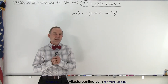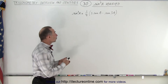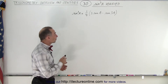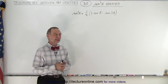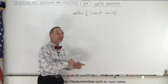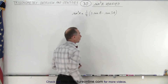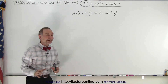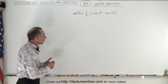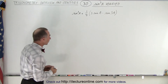Welcome to iLectureOnline. Here we need to show that sine cubed of A is equal to one quarter the quantity 3 times the sine of A minus the sine of 3A. We're going to show that this expression is indeed correct — that this is indeed the proper way of writing sine cubed of A in its equivalent expression.